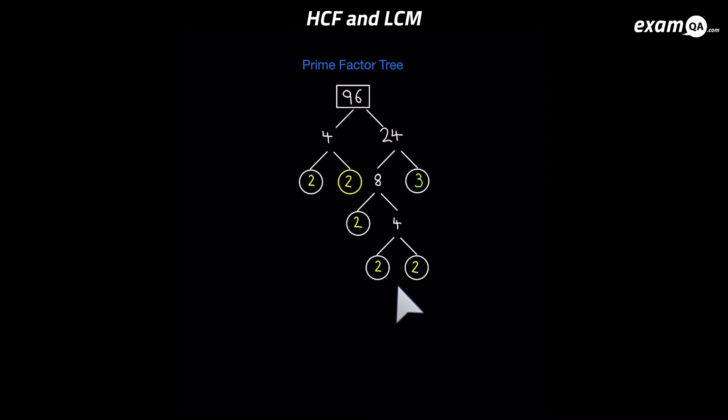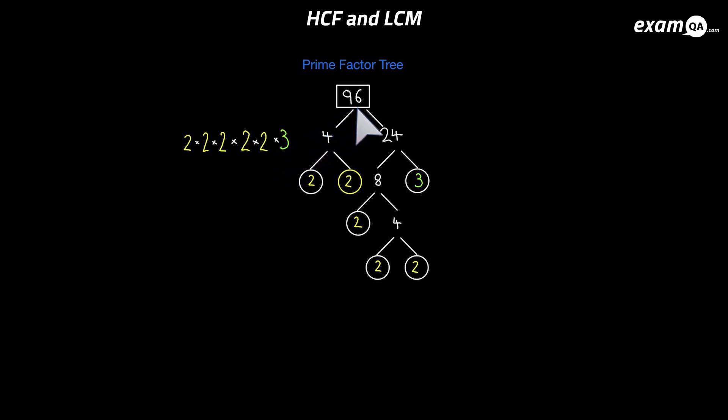We can now list all the prime factors of 96. We've got five twos: two times two times two times two times two, and one three: times three. If you multiply all that together you should get 96 — you can check that to see if you've gone wrong. In index form, that's two to the power of five times three.